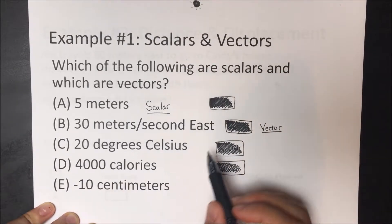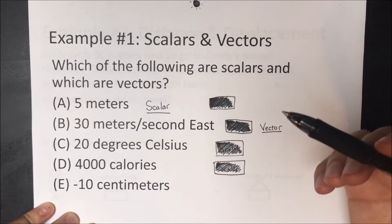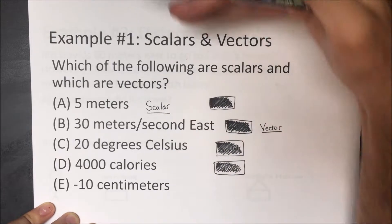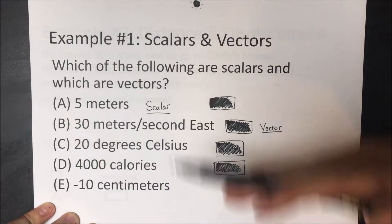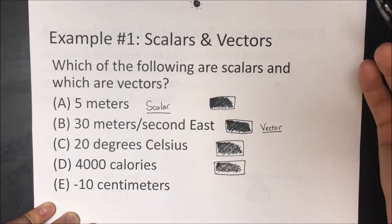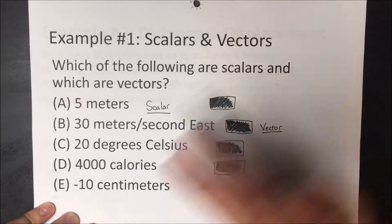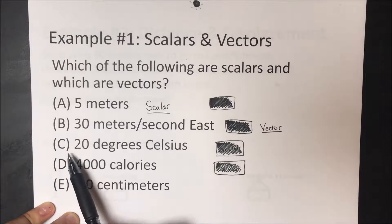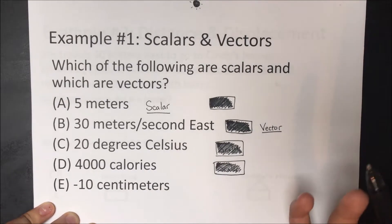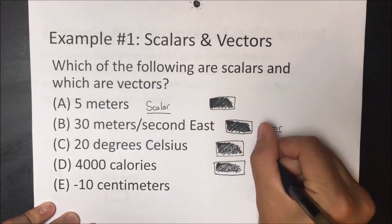C says 20 degrees Celsius. This can be a little tricky because when we think of temperature, we might think thermometers go up and down, so maybe it has a direction. But no — when you hear 50 degrees Fahrenheit or something like that, it doesn't show you a direction. So 20 degrees Celsius has no direction, therefore it is a scalar.